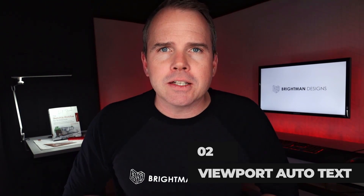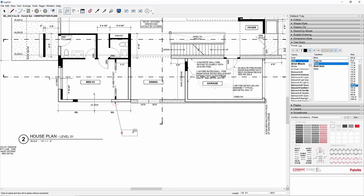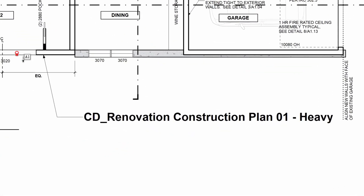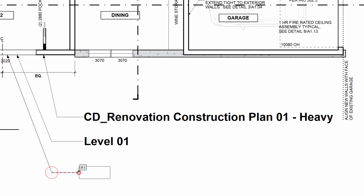Five new viewport auto-text tags have been added in this release. Brace yourselves — this is going to be a rocky road. Scene Name, Scene Description, and Scale are three new labels that could possibly be used together to create a dynamic drawing title that automatically names itself and gets the scale right. Sounds promising so far. Let's see if they deliver.